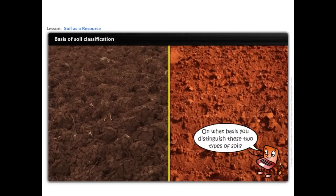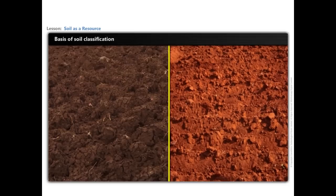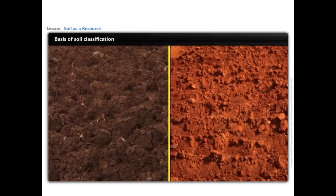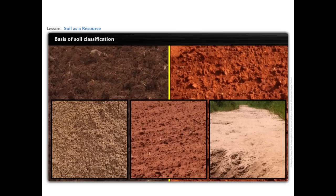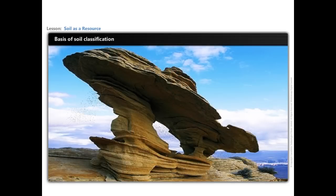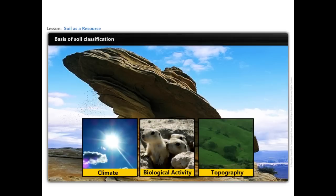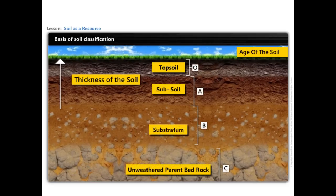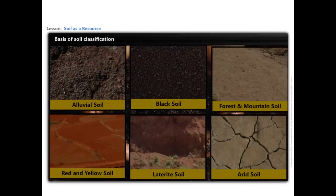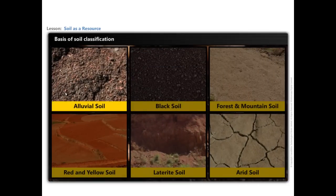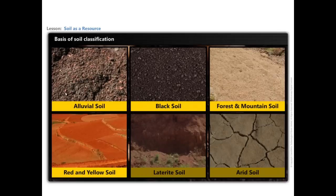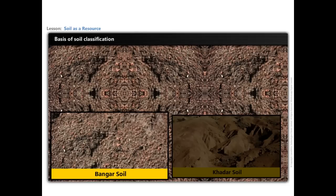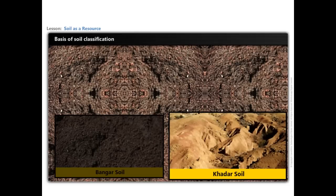Soil can be classified into various types based on distinguishing characteristics including: color of the soil; factors responsible for soil formation like parent material, climate, biological activity, topography, and time; thickness of the soil; texture based on the materials the soil is made up of; age of the soil; and chemical and physical properties. Soil in India can be classified as alluvial, black, forest and mountain, red and yellow, laterite, and arid. Alluvial soil is divided into two types: Bhangar or old alluvium with more kankar nodules, and Khadar or new alluvium which consists of finer particles and is more fertile.